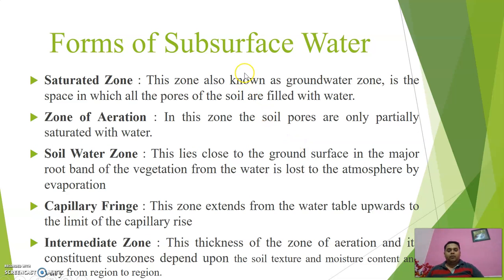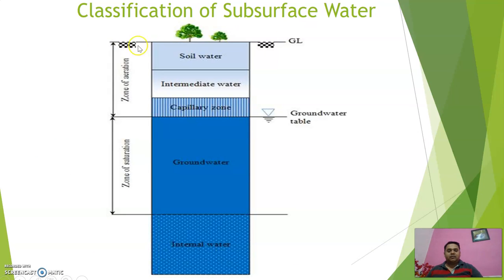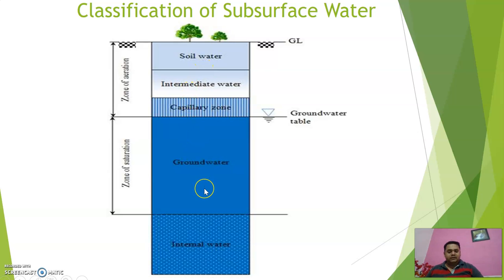We have various forms of subsurface water: saturated zone, zone of aeration, soil water zone, capillary fringe, and intermediate zone. This basic diagram shows subsurface water classification in different zones. Above ground level we have vegetation, and below the ground level all the zones: soil water, intermediate, capillary, groundwater, and internal water.